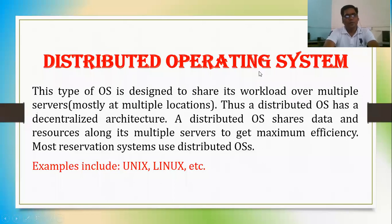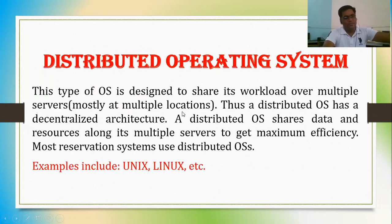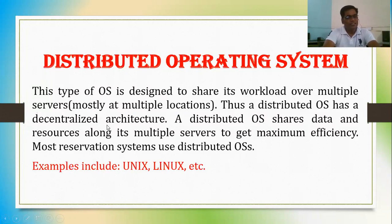The next is distributed OS. This type of OS is designed to share its workload over multiple servers, mostly at multiple locations. As you know, Google's servers are kept in different countries so that the load can be shared. A distributed OS has a decentralized architecture and shares data and resources across its multiple servers to get maximum efficiency. Most reservation systems use this distributed OS. Examples include Unix and Linux.